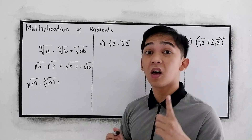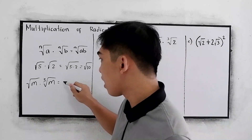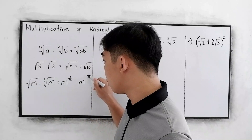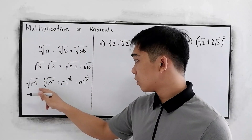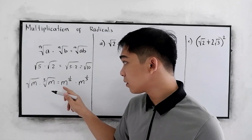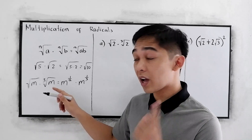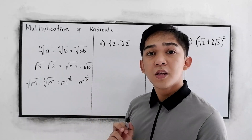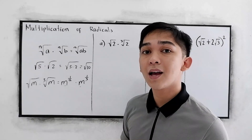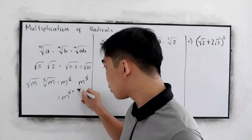Reviewing our laws of radicals and rational exponents, we can write this as m raised to 1/2 times m raised to 1/3. The rational exponent equivalent of square root of m is m raised to 1/2. Now, following the rules of laws of exponents, if we have the same base, we're just going to add the exponents.